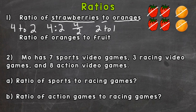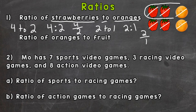So I'm going to rewrite the simplified ratios: two to one. With the colon: two to one — two strawberries to every one orange. And as a fraction: two over one. Looking at the picture in the top right, we can see two strawberries to one orange, confirming our simplified ratio matches the picture.